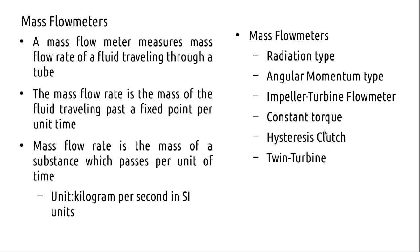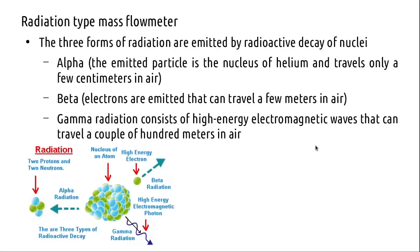The first type is a radiation type of mass flow meter. In radiation type mass flow meters, we use gamma radiation. Some background on radiation: radioactive radioisotopes decay and produce alpha, beta, and gamma radiations.